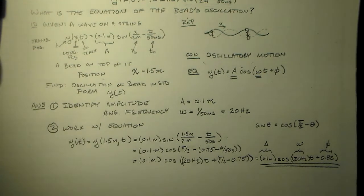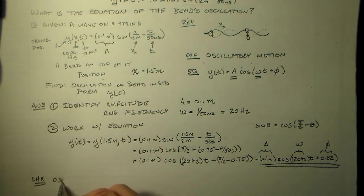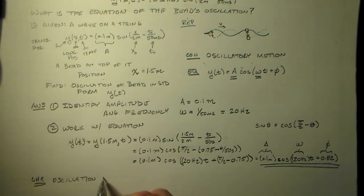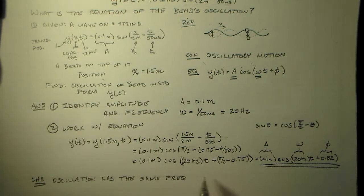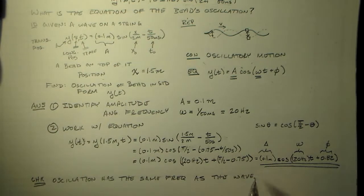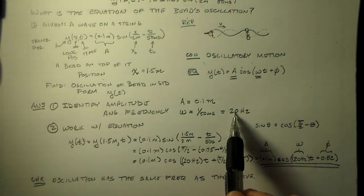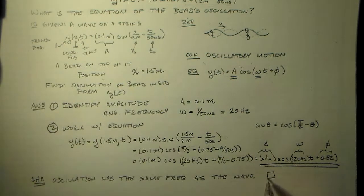And we can do a check here. I think the best check is to say well the oscillation has the same frequency as the wave. Right. I didn't force it to. It just came out. Right. If I had forced this to happen, if I had taken this and I just said okay I know this is going to be true and I put it in there, that would be one thing. But it just sort of came out. Right. So I can check it. I can use it as a check because I didn't force it to be that way.